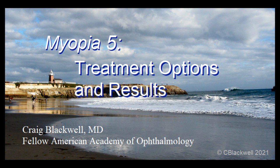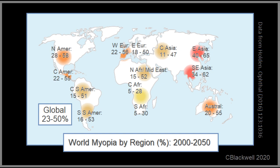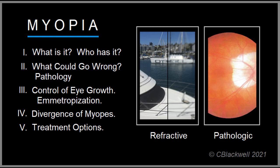This is video number five in our series about myopia. In it we are going to cover treatment methods aimed at slowing progression of myopia and look at their results. Myopia is well known as a cause of blurry distance vision but it has lesser known side risks it poses to eye health. Because it is increasing around the world it is drawing a lot of attention. In this series we have divided myopia into five subject videos covering what is myopia, what can go wrong, eye growth and how it diverges into myopia, and this video about treatment methods.